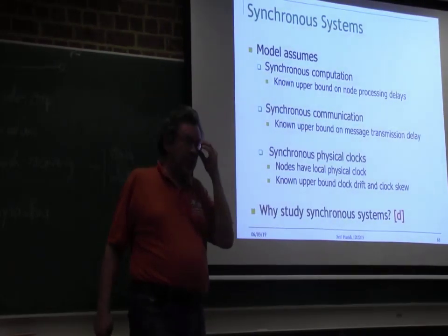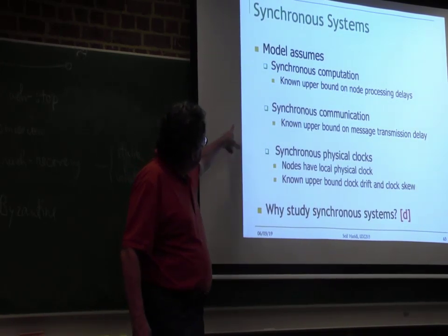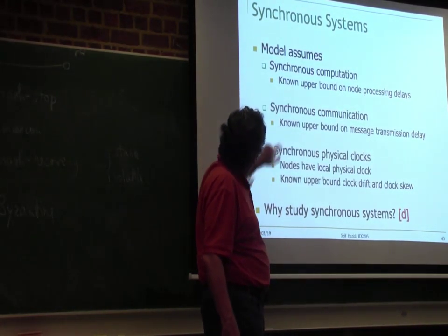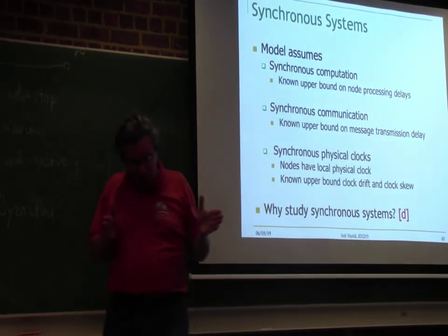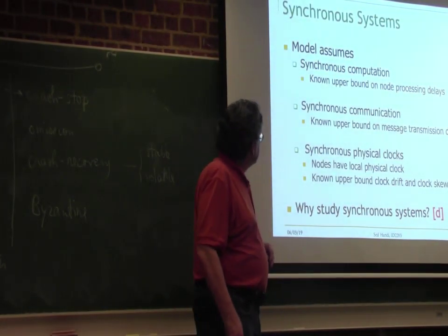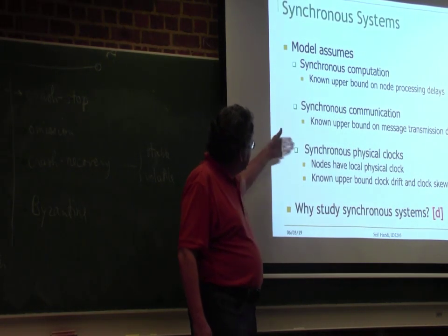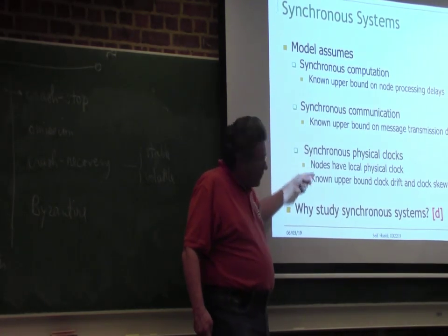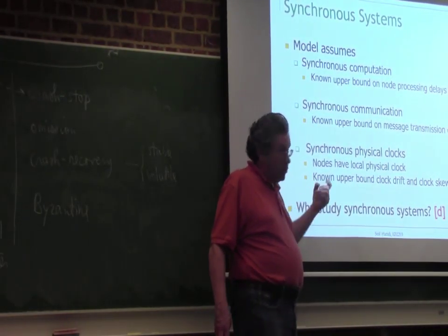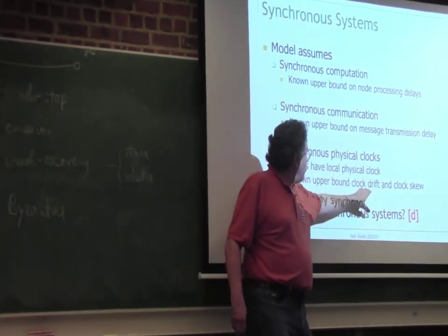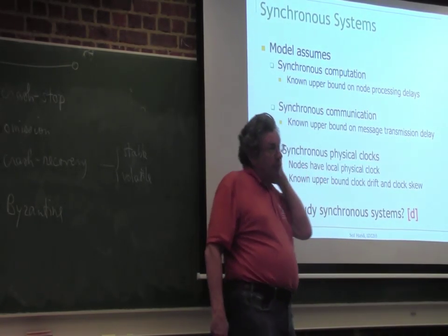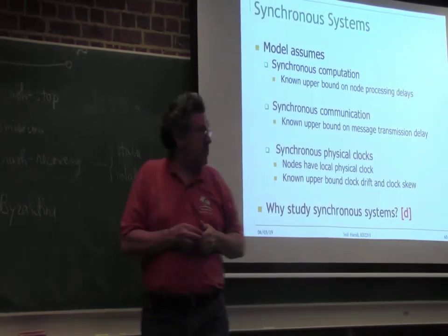Asynchronous is kind of the worst case — it's hardest to make the algorithms. In the other extreme, there are synchronous systems, where you have known upper bounds on computation and on communication. That means whenever you send a message, you know it's going to take a maximum of, say, 10 milliseconds or 30 microseconds. In this system, you have physical time clocks because of these bounds — you know what the time is. You can check the time, you know the clock drift and clock skew.